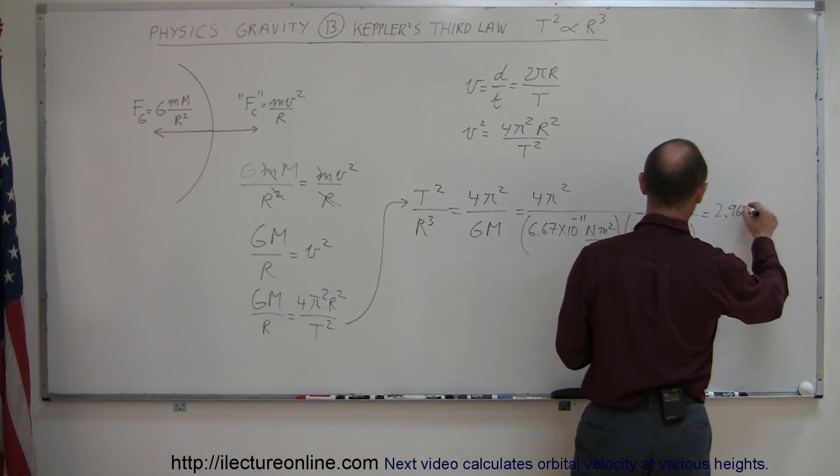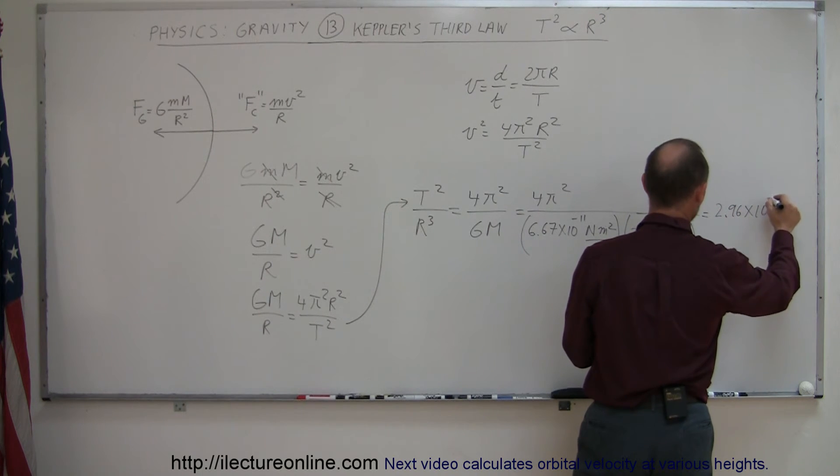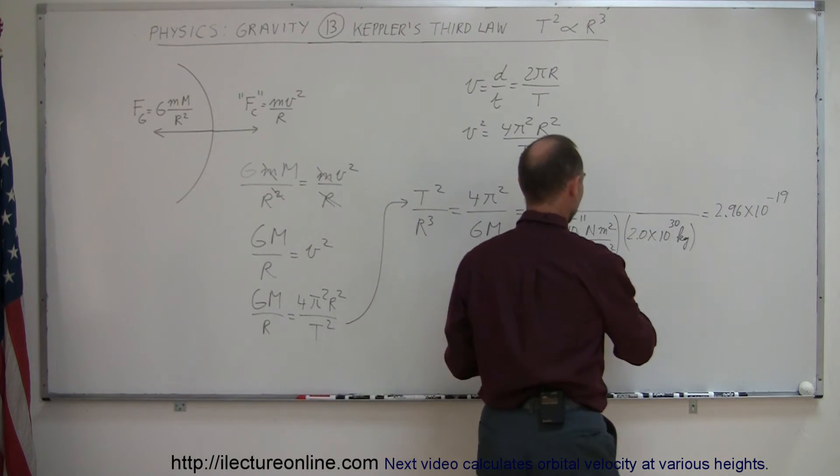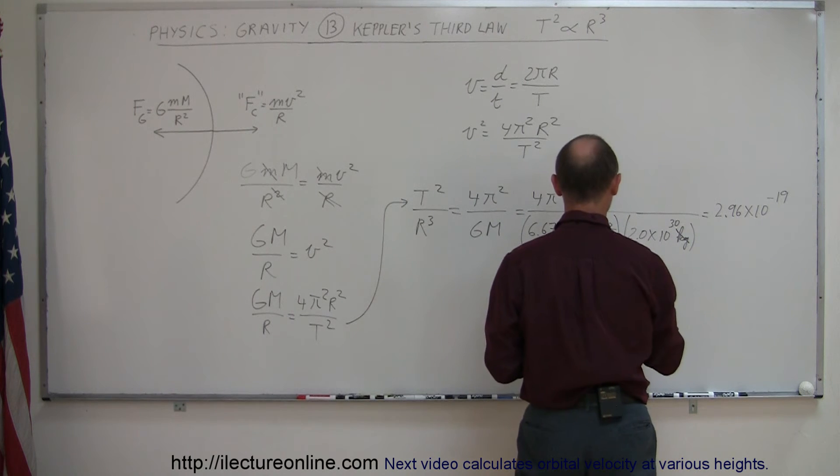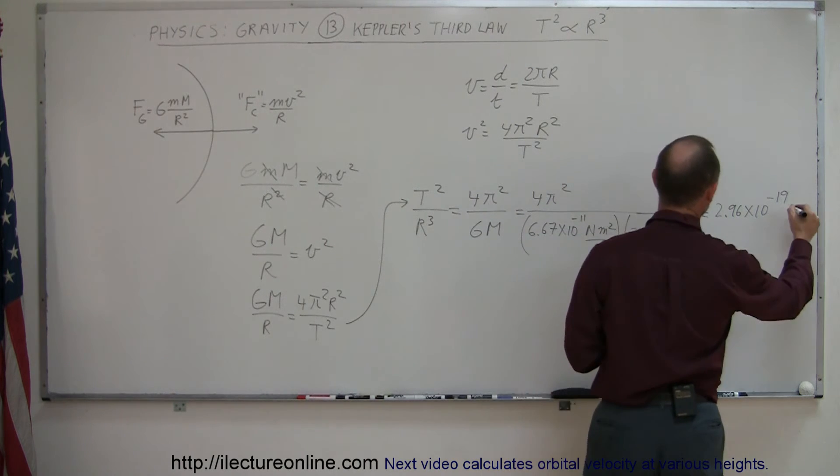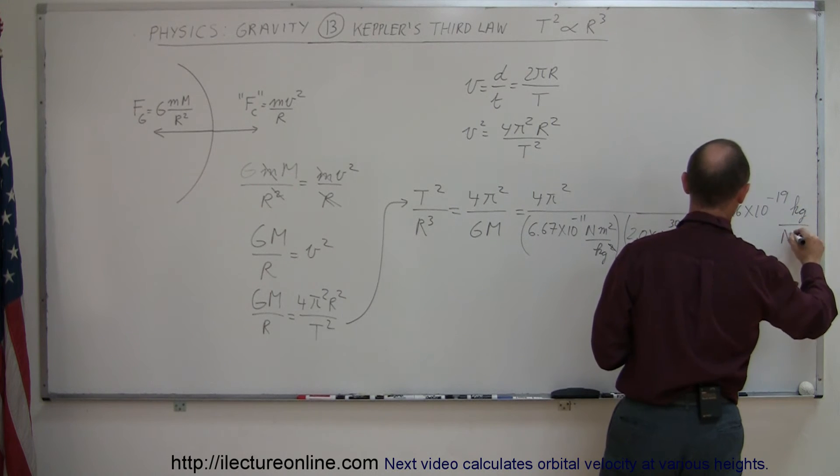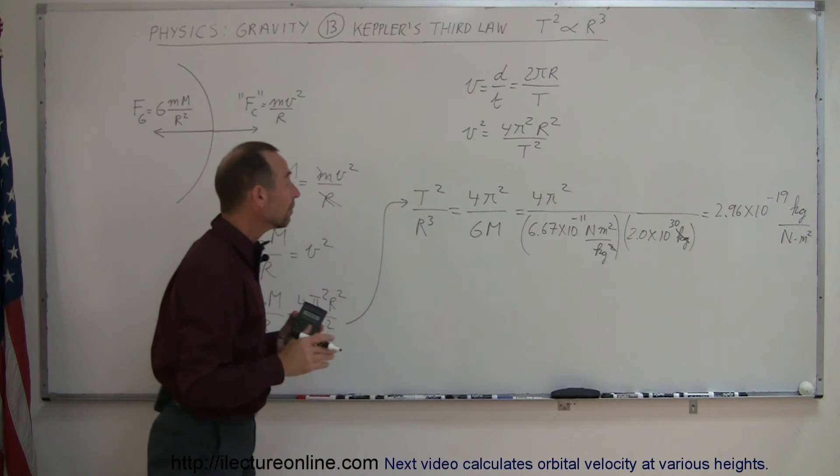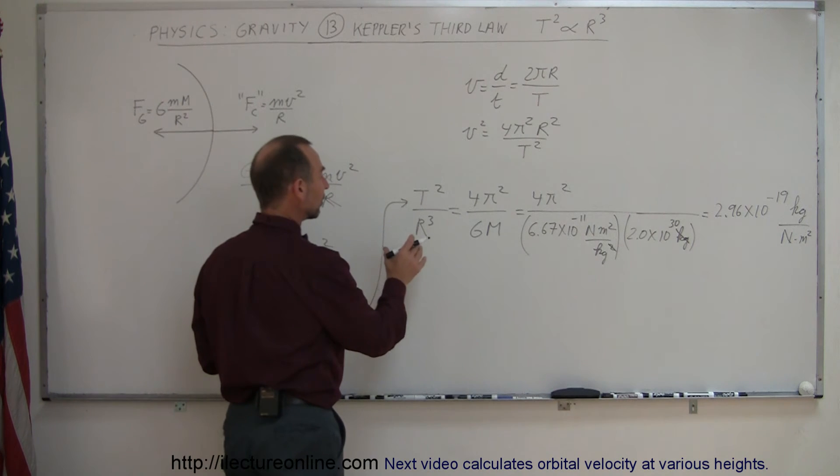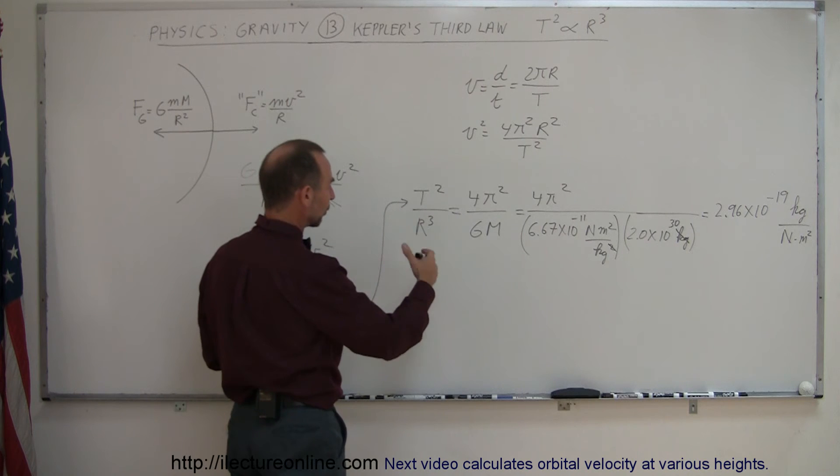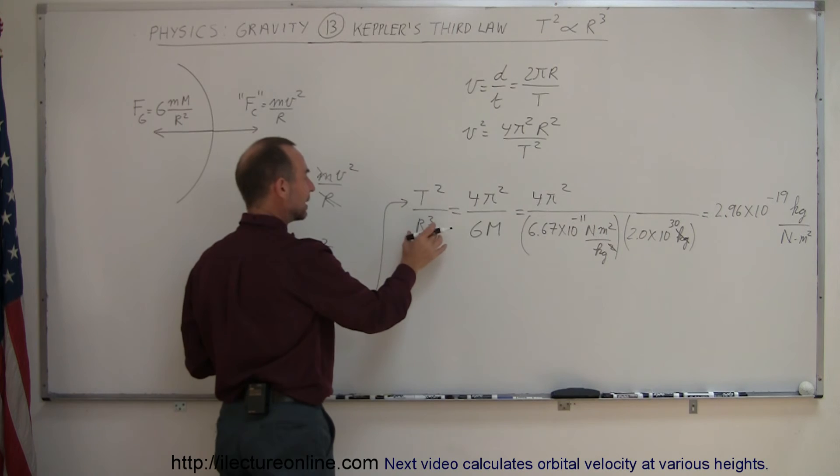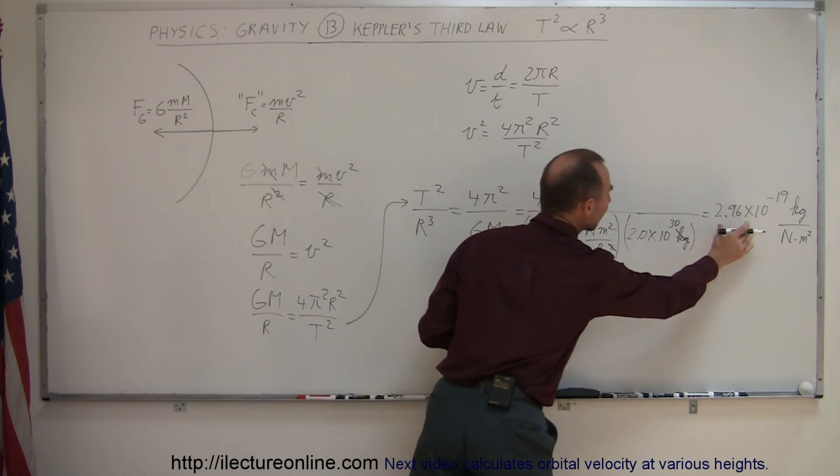2.96 times 10 to the minus 19th. Now, what are the units? Well, we have this kilogram cancels one of those kilograms, so this would be newtons times meters squared over kilograms. Units are not important. We're really looking for that constant. Now, what that means is for any planet in our solar system, be it Earth, be it Jupiter, be it Mars, be it Venus, the period of its orbit squared divided by the radius of its orbit cubed will always equal this particular constant.